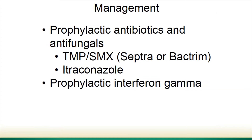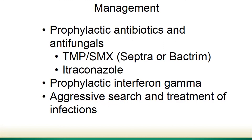Management of CGD includes prophylactic antibiotics and antifungals and prophylactic interferon gamma. The most commonly recommended antibiotic is trimethoprim-sulfamethoxazole (TMP-SMX, also known as Septra or Bactrim). Itraconazole is the most common antifungal used, though voriconazole and posaconazole are also used. Interferon gamma is also used for infection prevention. There is also a constant, aggressive search and treatment for infections — patients are routinely evaluated even when asymptomatic to confirm that prophylaxis is working, as it reduces but does not 100% prevent infections.